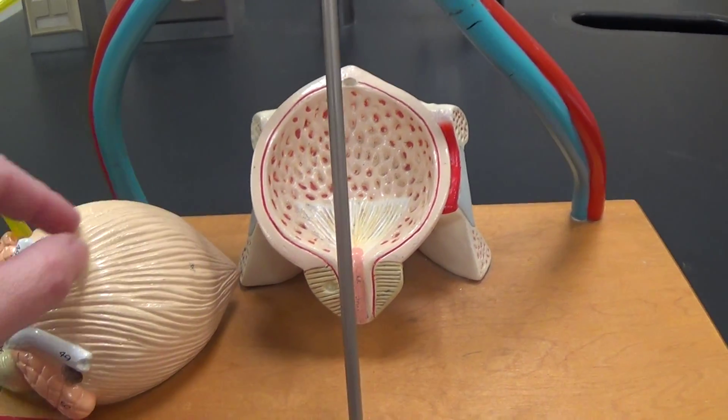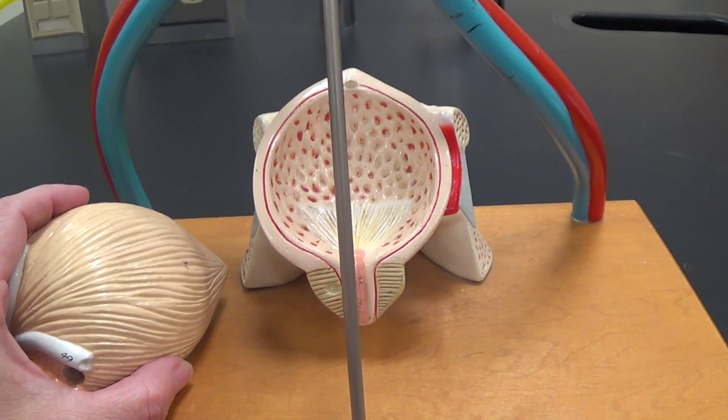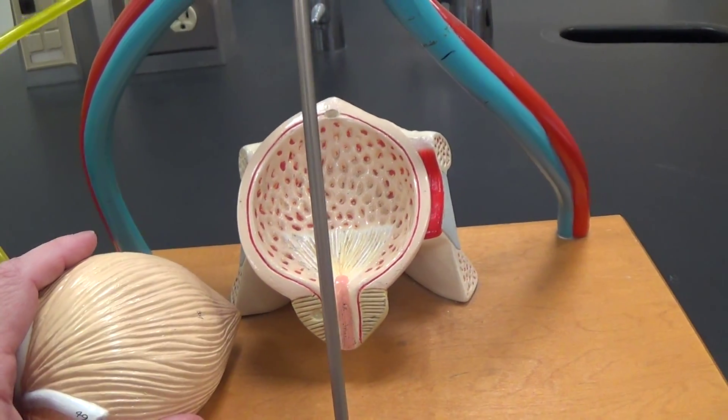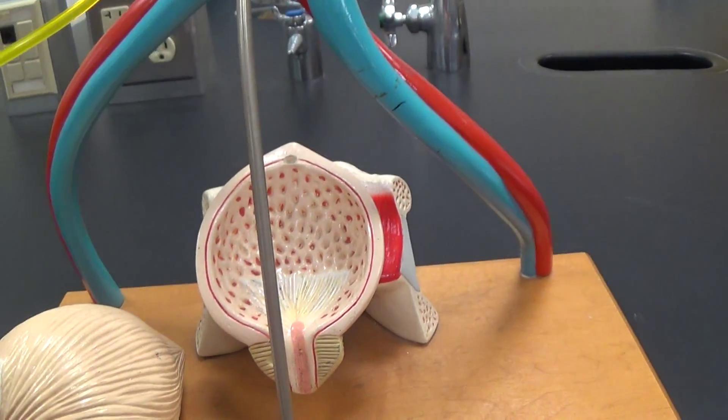This almost hair-like-looking striped appearance represents detrusor muscle on the outside of the bladder. Kidneys were up higher.